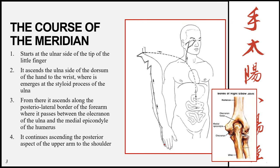Now let's look at the course that this meridian flows. This meridian starts at the tip of the ulnar side of the little finger. If you think back to the heart meridian, that also ended at the tip of the little finger, but on the radial side instead of the ulnar side — that's the key difference. Then this point descends along the ulnar side of the dorsum of the hand, and it descends up the ulnar and dorsal aspect.